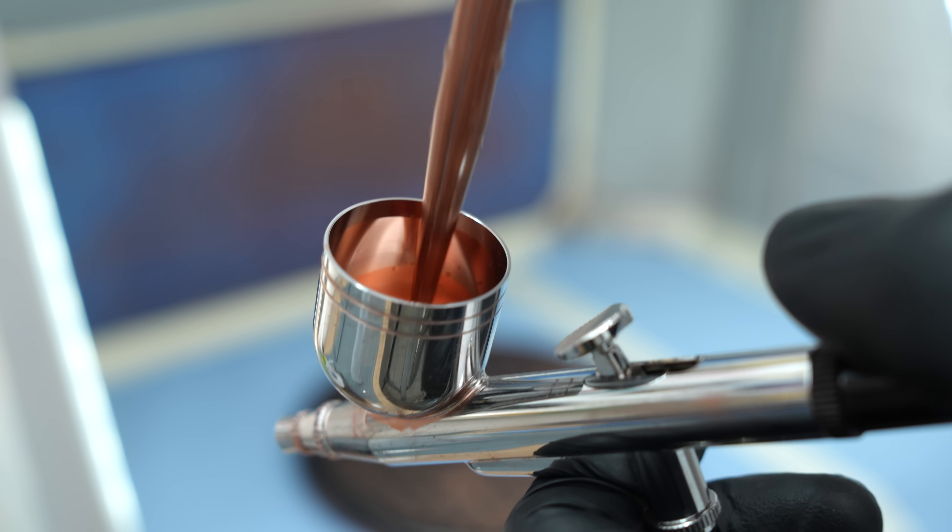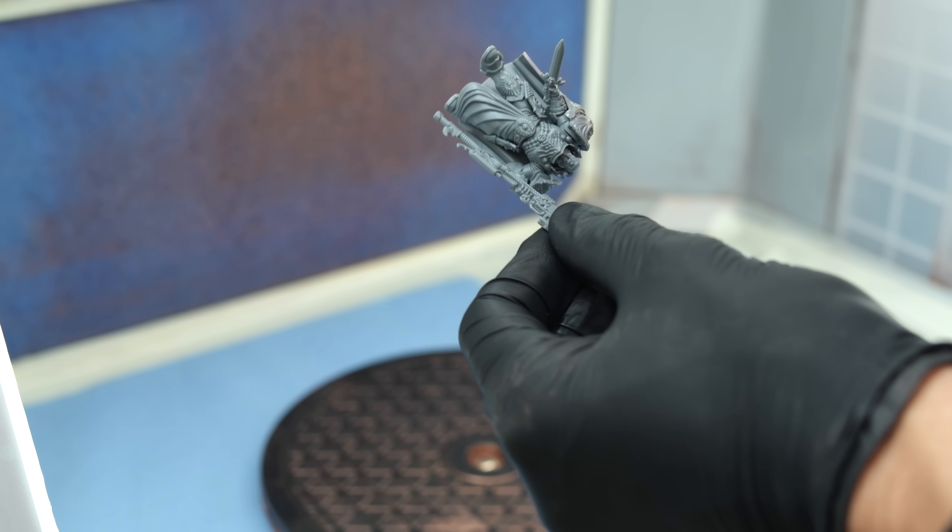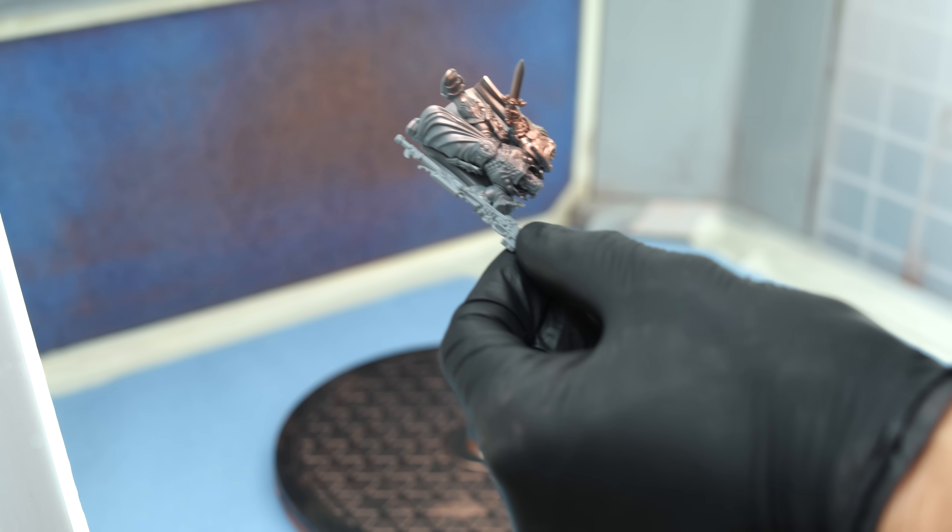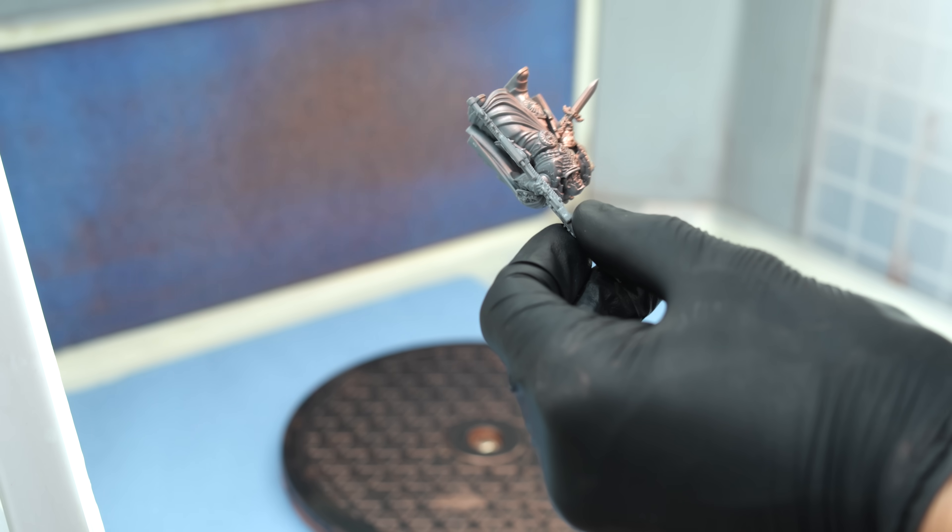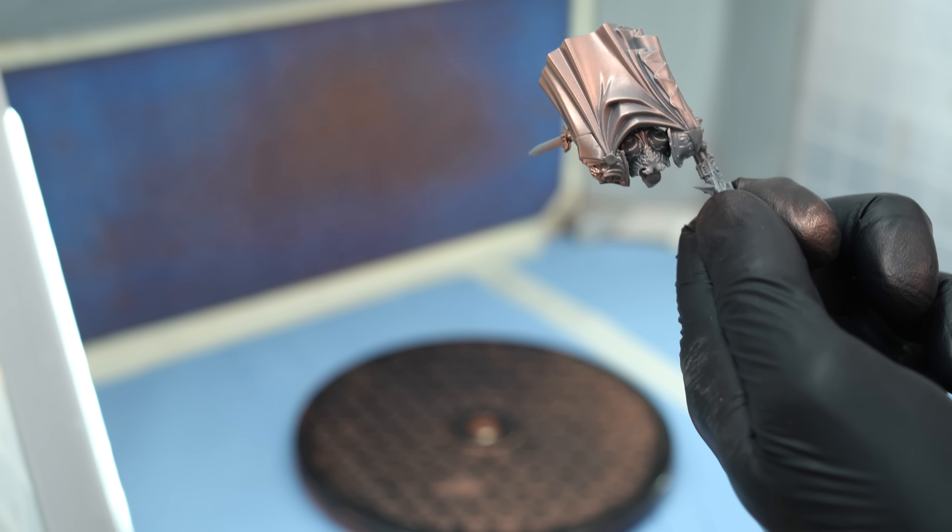Now I'm spraying several light layers of the conductive paint directly onto the model. I make sure to cover all areas and ensure it's not applied too thinly. This is important, don't spray too thinly. Ideally, this thin conductive layer should be even and smooth.